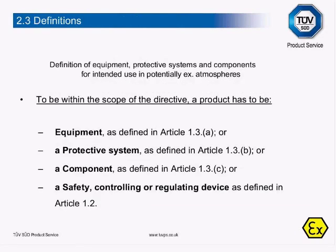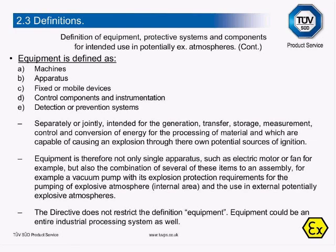Definition of Equipment, Protective Systems and Components for Intended Use in Potentially Explosive Atmospheres. To be within the scope of Directive 94/9/EC, the product has to be one of the following: Equipment, a protective system, a component, or a safety, controlling or regulating device. Equipment is defined as machines, apparatus, fixed or mobile devices, control components and instrumentation, detection and preventing systems — separately or jointly intended for the generation, transfer, storage, measurement, control and conversion of energy for the processing of material — and which are capable of causing an explosion through their own potential sources of ignition.